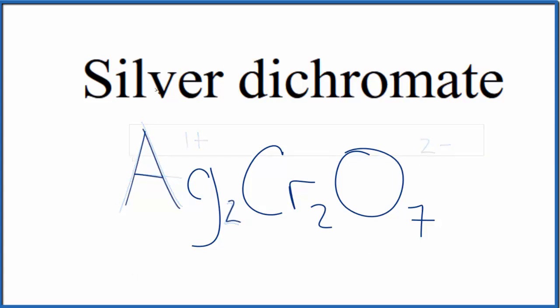So this is the formula for silver dichromate, Ag2Cr2O7, and this dichromate ion right here is the Cr2O7.